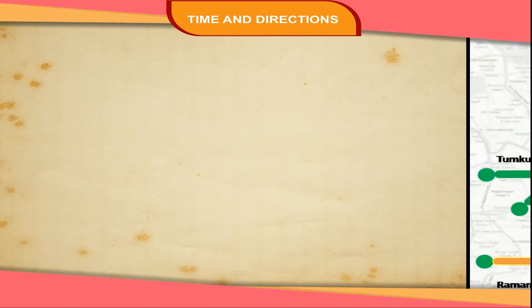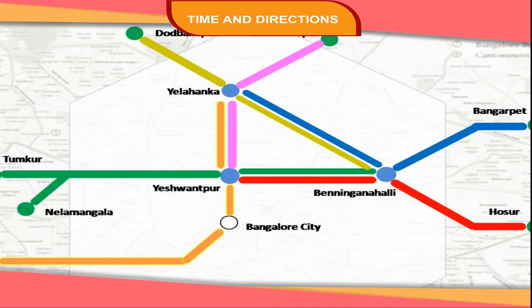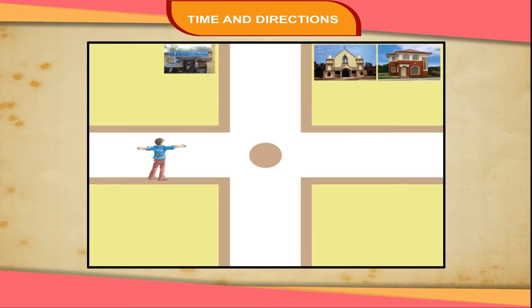Locating places. A route map helps us to locate places. Suppose John has invited his friend Rohan on his birthday. John draws a route map as follows: Move to the right side of your house. After walking about 200 meters, turn to the left side and walk along the road. You will find a bank. In front of the bank, there is a church. Behind the church is my house. Rohan follows the route map and he easily finds the house of John.